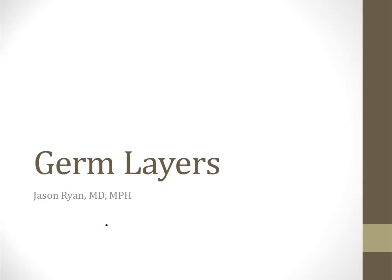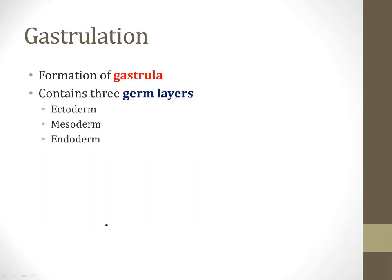Hello everyone, and welcome to our module on germ layers. In the video on embryogenesis, I talked about the process of gastrulation when the embryo forms into a gastrula, and a gastrula is a structure that contains the three germ layers: the ectoderm, the mesoderm, and the endoderm. For the USMLE Step 1 exam, they're going to want you to know which structures derive from each layer. I'm going to give you some general rules of thumb that are often enough to get the question right.